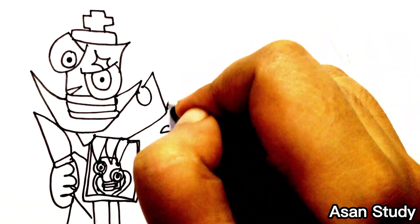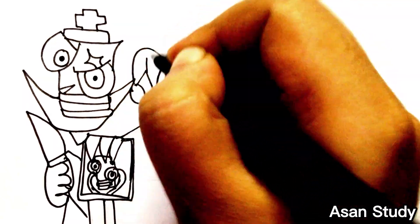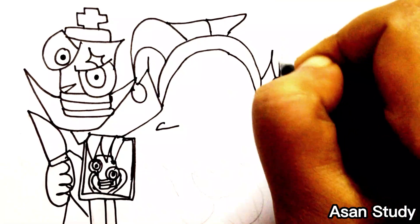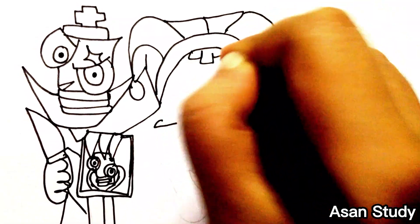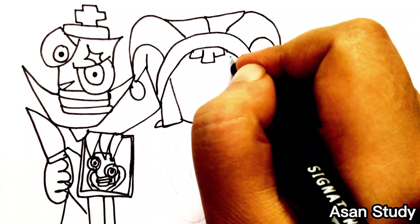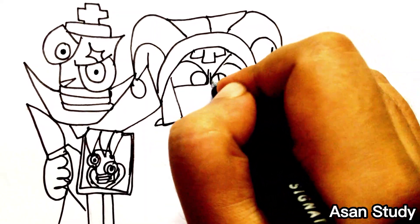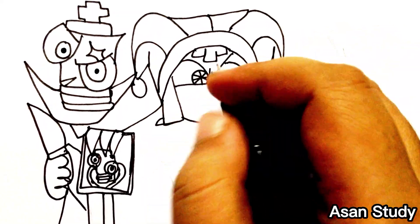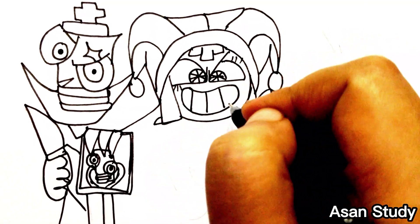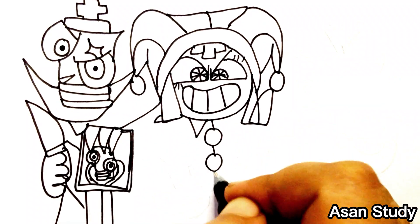Now we will go to Evil Pomni. Now we are drawing Evil Kangaroo.